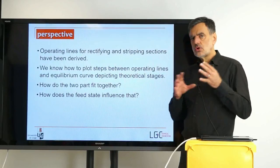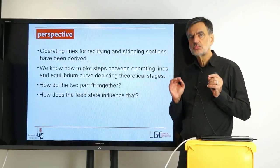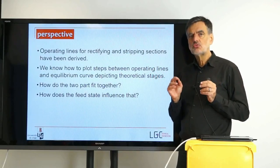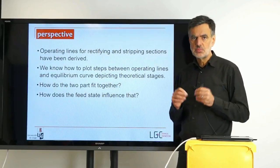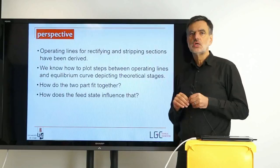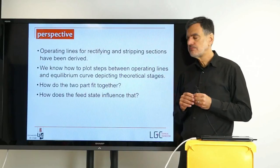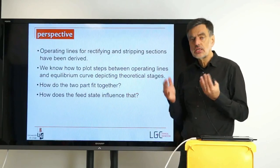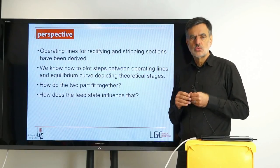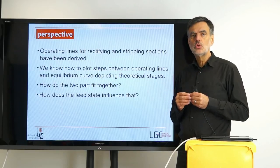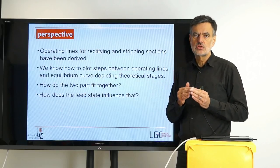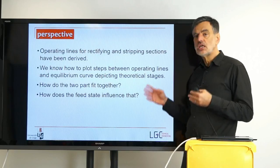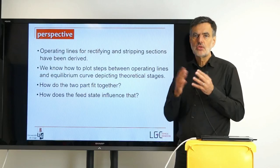The only point that was open was the question: what is the second point of the stripping line? For the rectifying line, we had two points. For the stripping line, we realized that we have one point on the diagonal at x_B, but we left open how the second point had to be derived. So there are two questions. The first question is simply how do the two parts fit together? And we can directly say that the two parts meet at the feed stage, so the feed somehow has to be involved in these considerations.